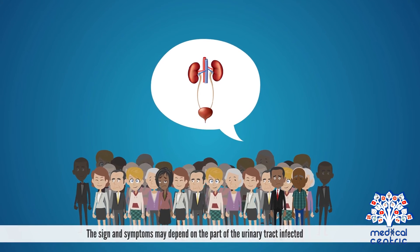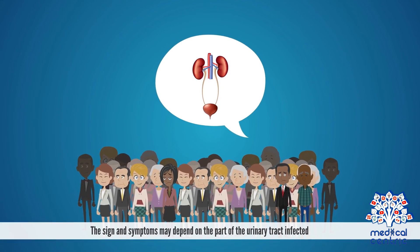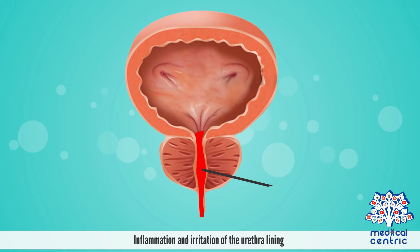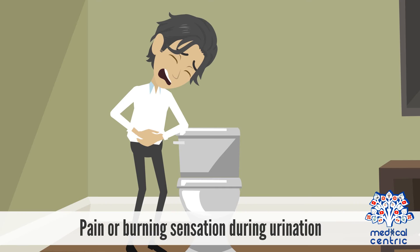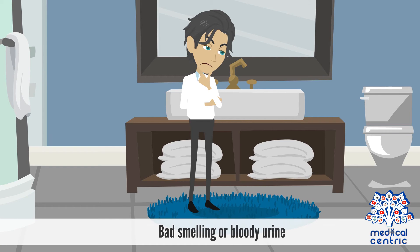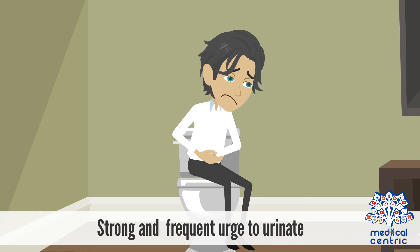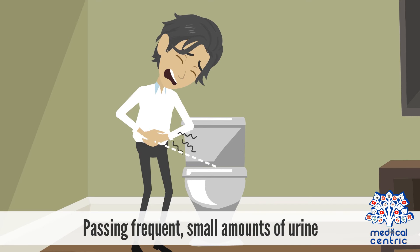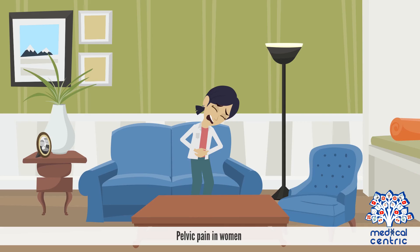The signs and symptoms may depend on the part of the urinary tract infected. Signs and symptoms of lower urinary tract infection may include inflammation and irritation of the urethra lining, pain or burning sensation during urination, bad smelling or bloody urine, strong and frequent urge to urinate, lower abdominal pain, passing frequent small amounts of urine, and pelvic pain in women.